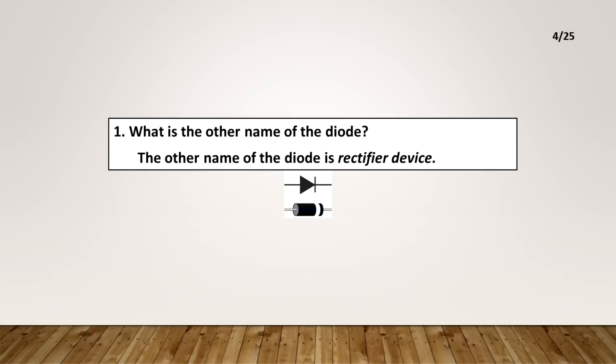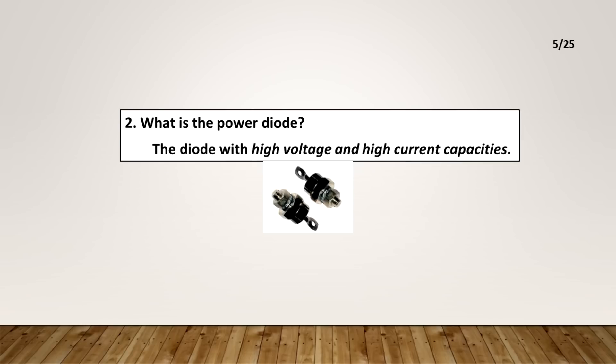What is the other name of the diode? The other name of the diode is rectifier device. What is the power diode? The diode with high voltage and high current capacities.